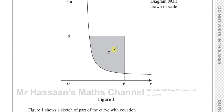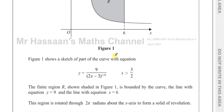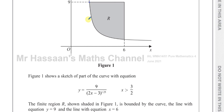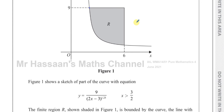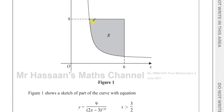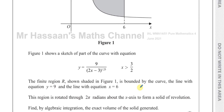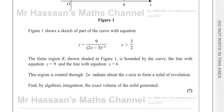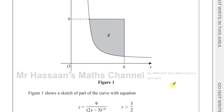It says a finite region R, shown shaded in the figure, is bounded by the curve, the line with equation y equals 9, and the line with equation x equals 6. The curve, y equals 9, and x equals 6 bound this region R. This region R is to be rotated around the x-axis through 2π radians — 360 degrees, one whole revolution — to form a solid of revolution. Find by algebraic integration the exact volume of the solid generated.